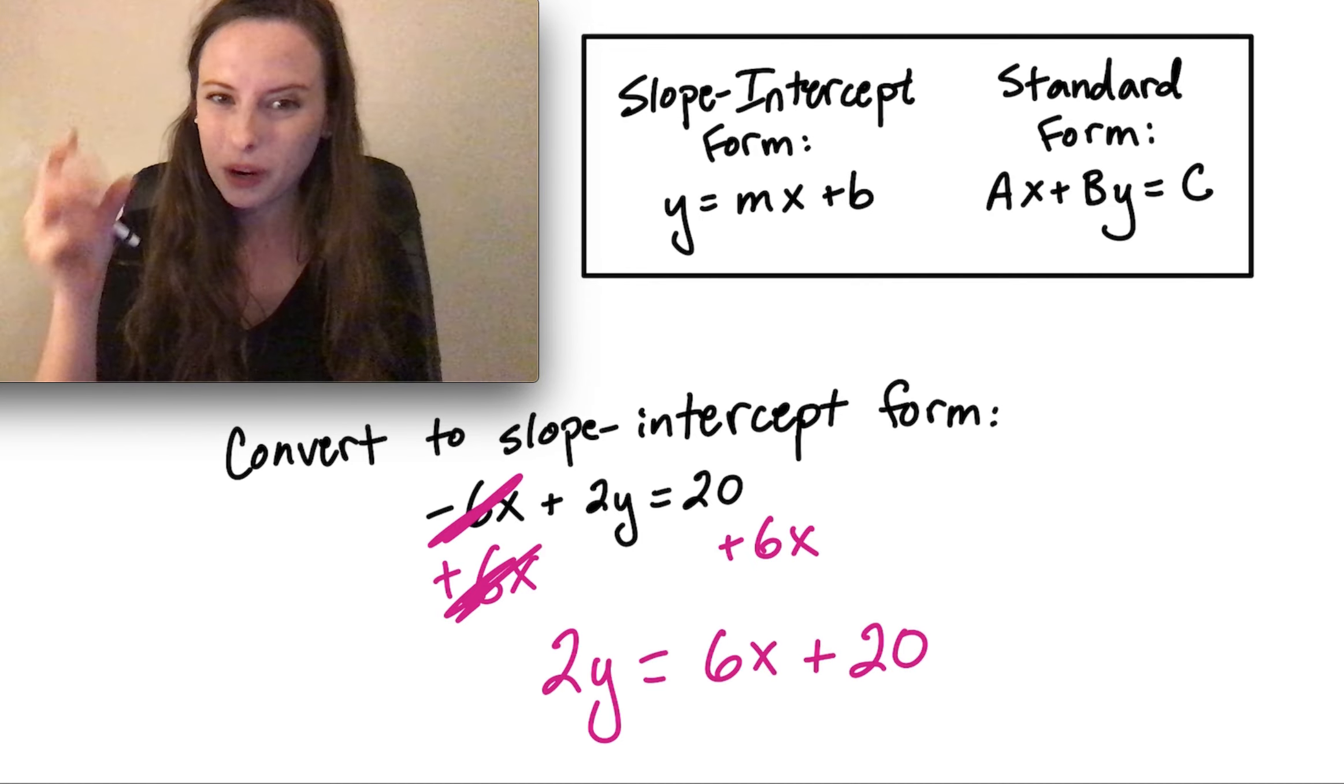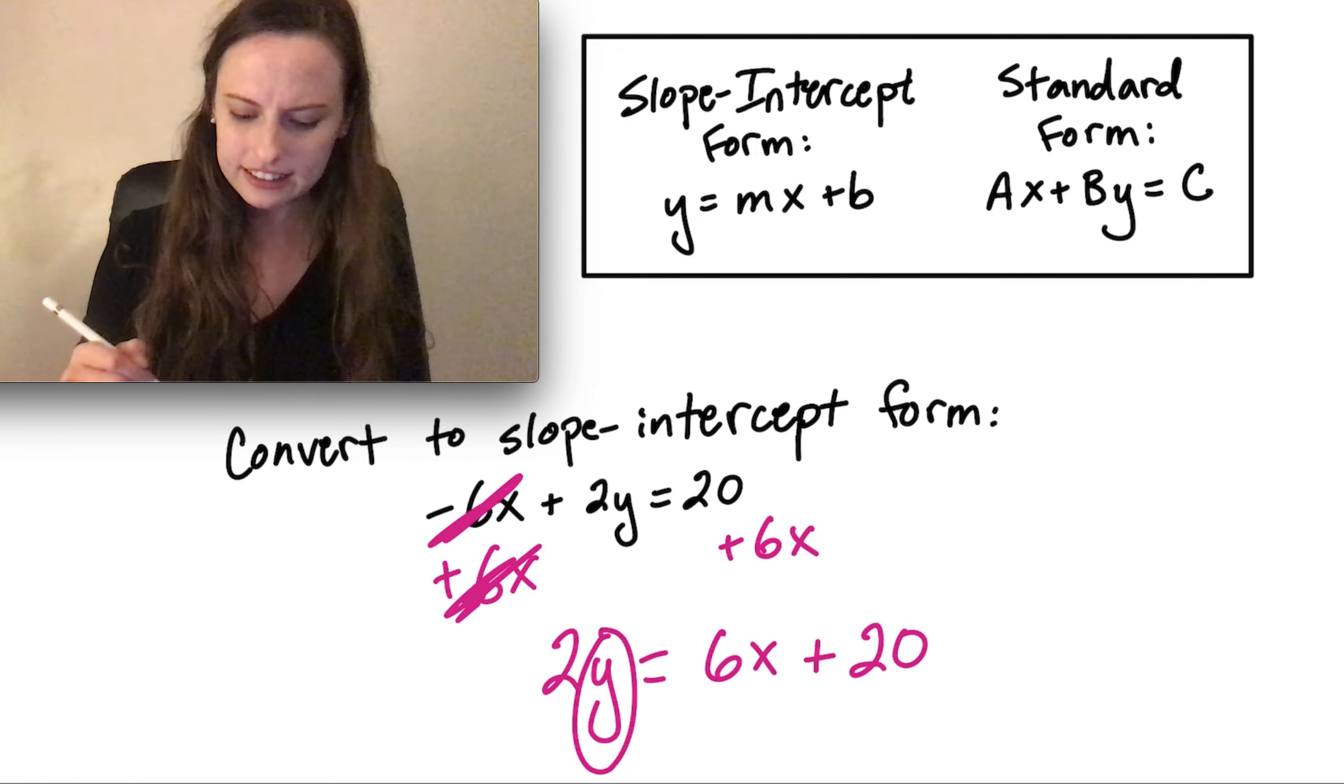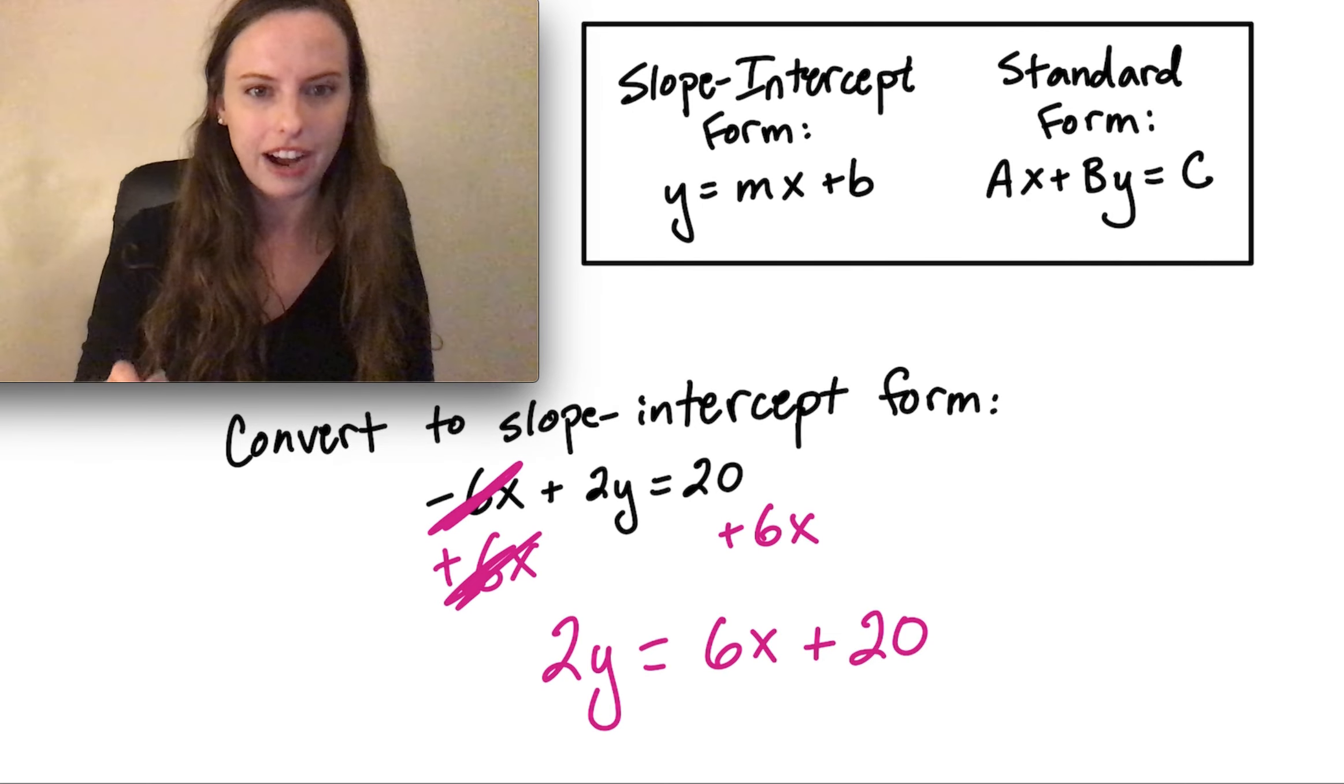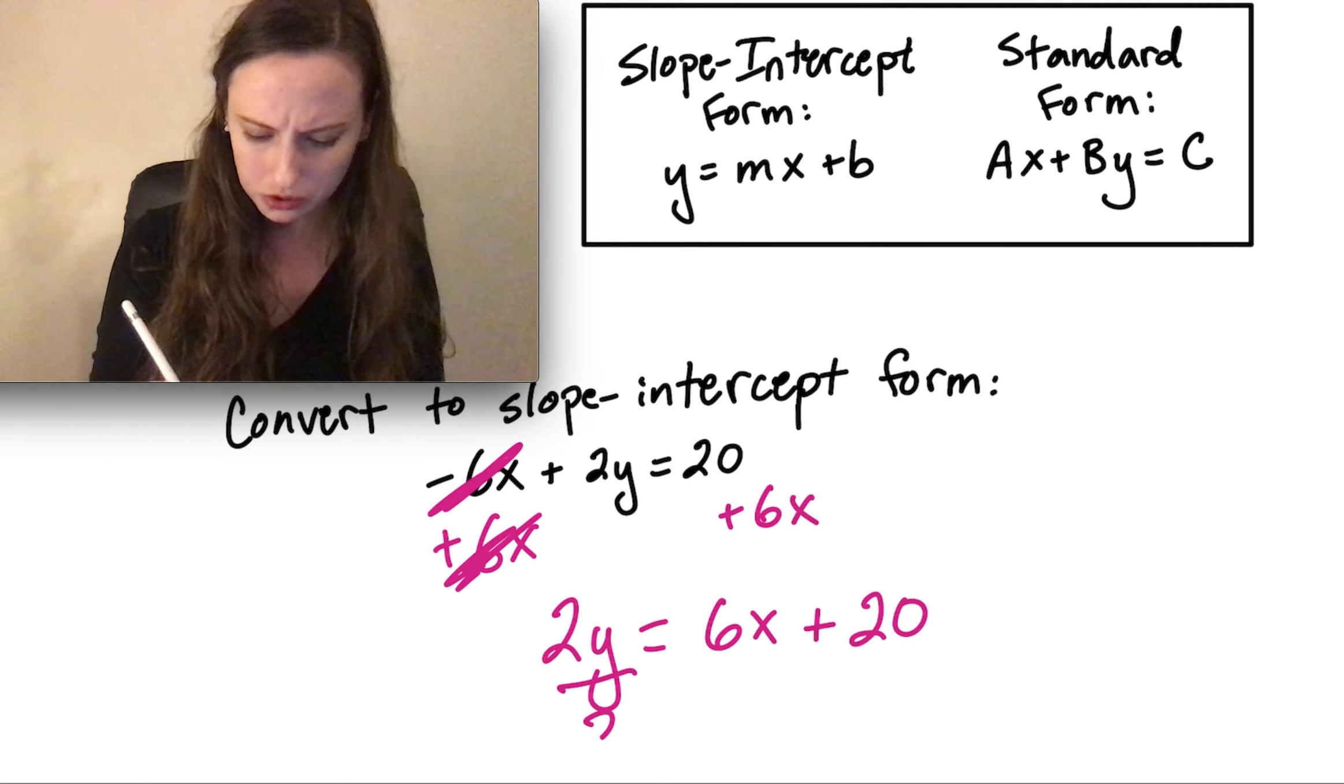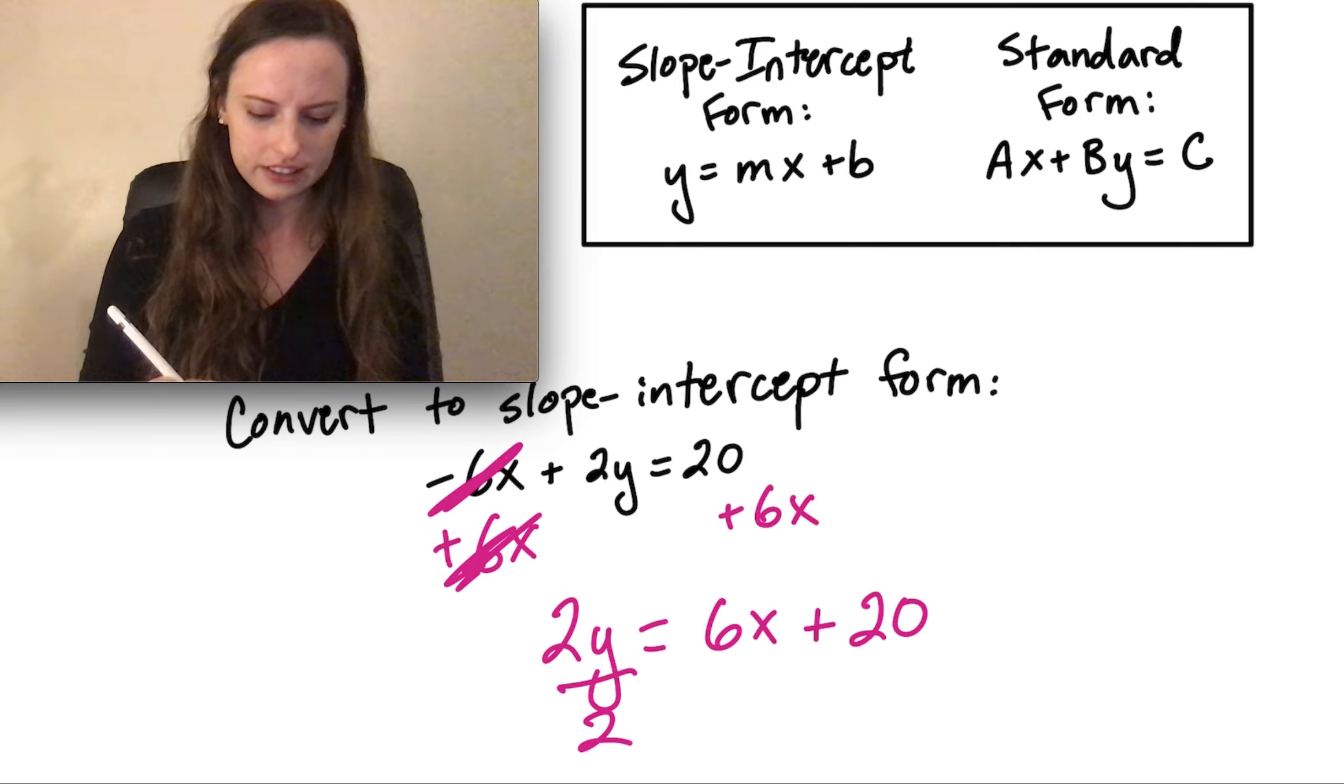Now again, we want to get that y by itself. Our next step is to divide both sides by 2. That'll cancel out the 2s on the left-hand side.